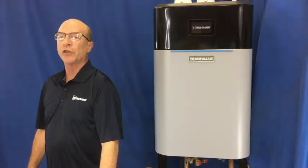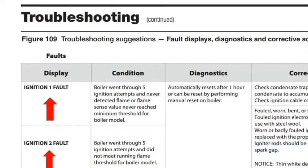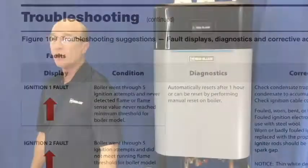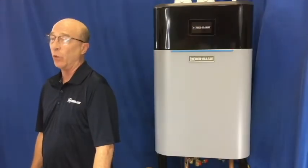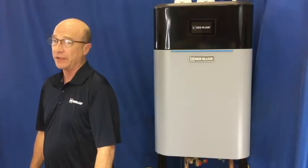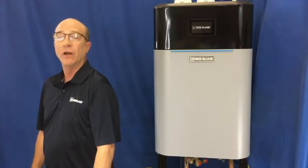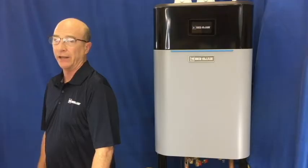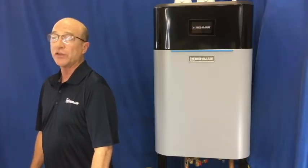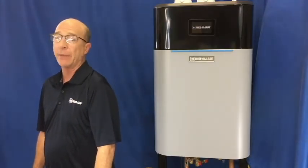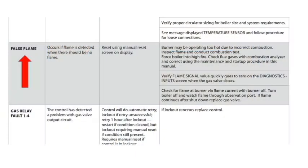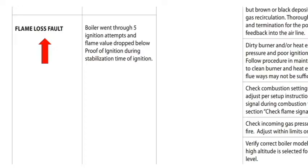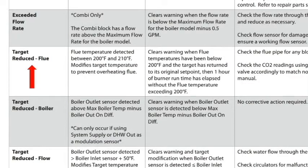The most common fault you could see would be an ignition fault. If the air-fuel mixture is well out of range, the boiler most likely will not fire. Or if it does, the flame signal may be so low the boiler will not stay lit. Other faults that may be caused by improper air-fuel mixture are false flame, flame loss fault, and target reduced flue temperature.